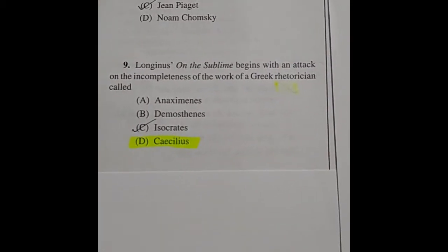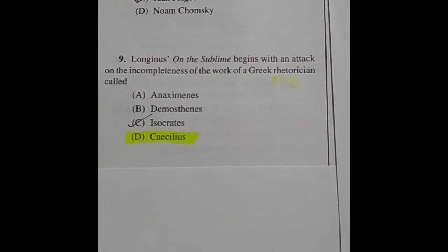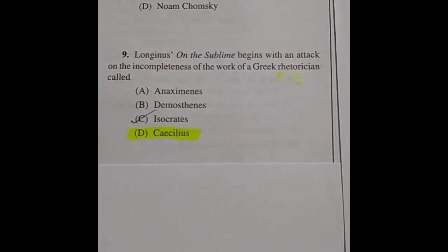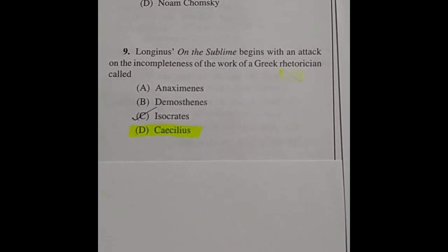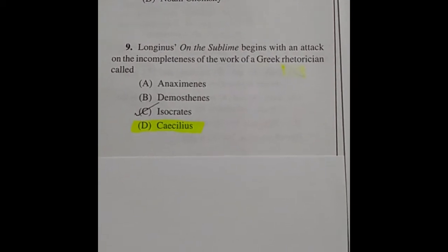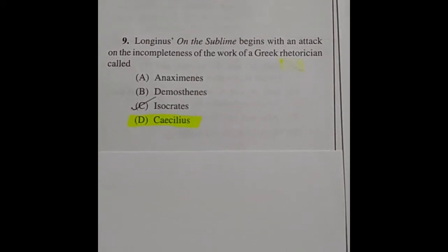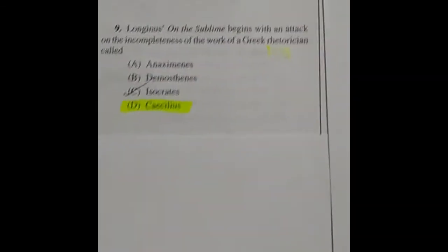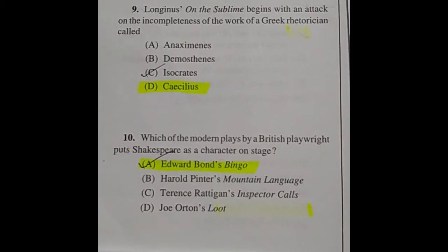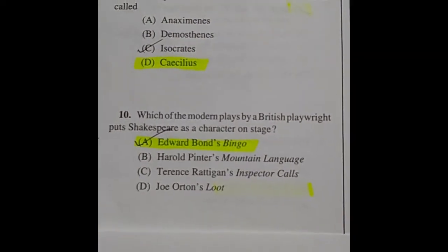Question 9: Longinus's On the Sublime begins with an attack on the incompleteness of the work of a Greek rhetorician called — the answer is option D: Caecilius.